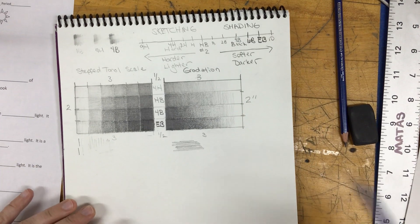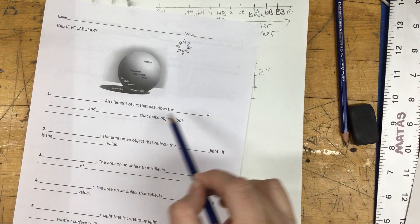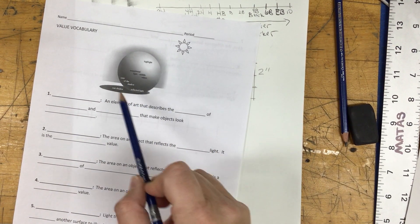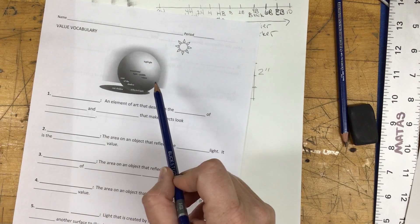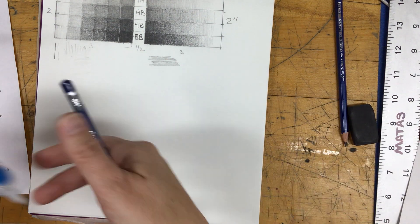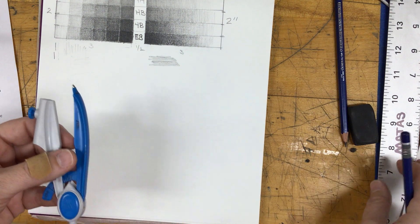Okay, so on the page where we did our value scales, we're going to practice drawing the sphere. We're going to draw this and shade this today, and then we'll label it when we're completely done. If you have a compass and you want to draw a circle, you can go ahead and do that.